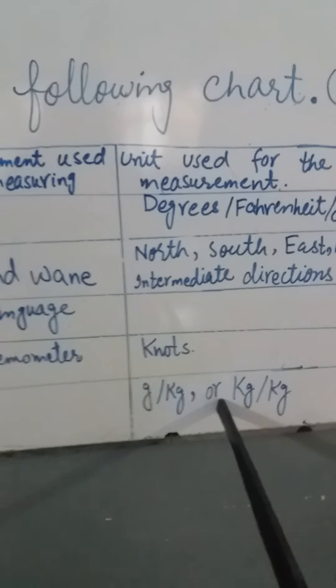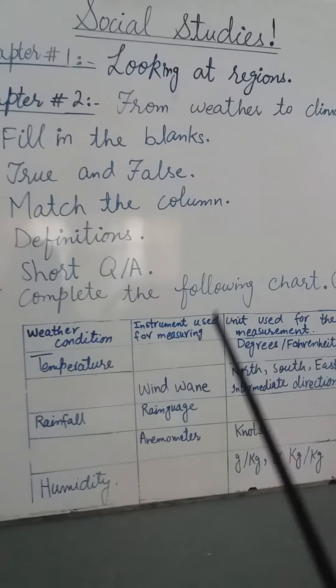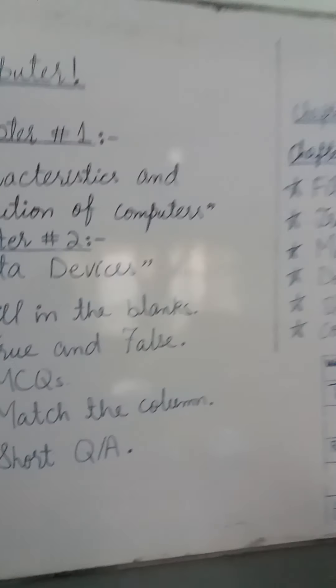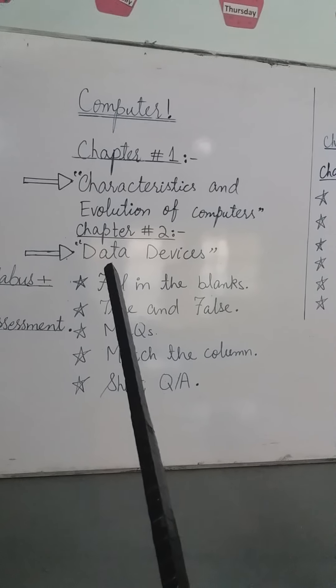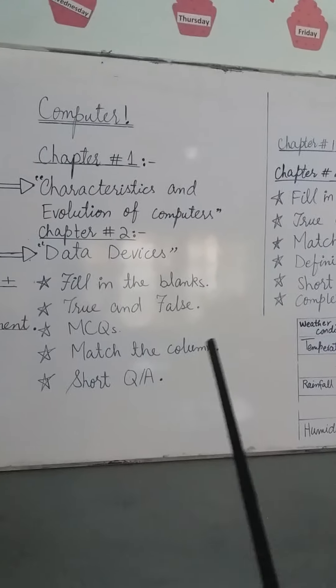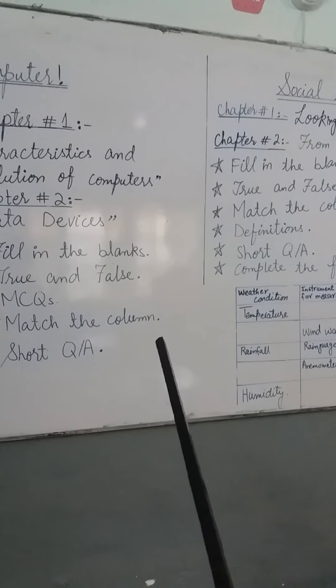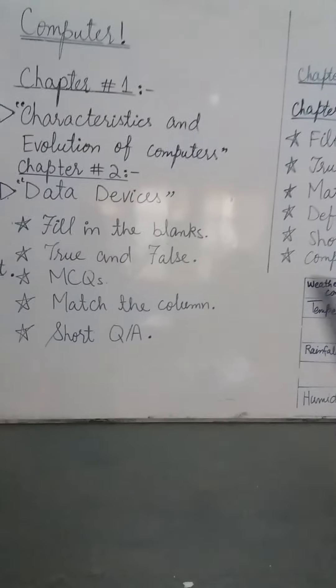So like this, there will be a chart, fill in the blanks, true and false, match the column, definitions, short question answers, and this chart in your first online assessment. You will have to learn all these things of both chapters of social studies — looking at regions and from weather to climate — and in computer studies, characteristics and evolution of computers and data devices. I will upload all these solutions with this video for your help. If there is anything missing in your notebook — fill in the blanks, true or false, or anything — some students didn't complete their task, so they can take help from this.